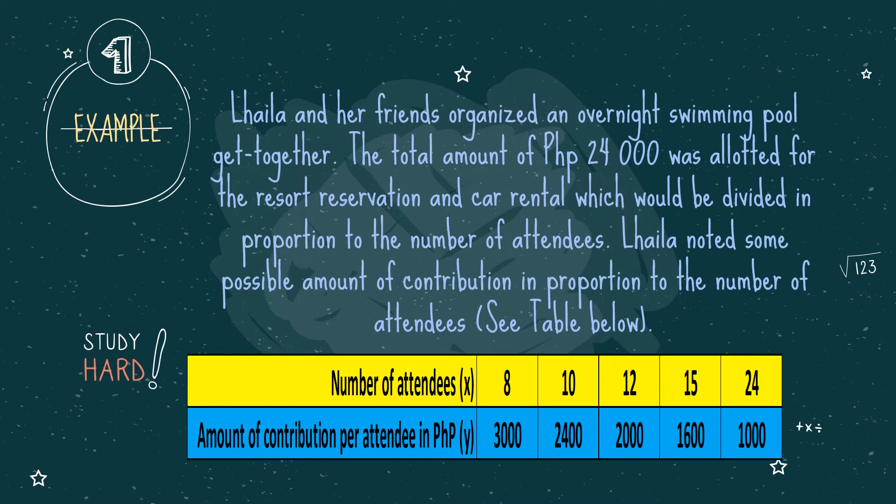For example, Laila and her friends organized an overnight swimming pool get-together. The total amount of P24,000 was allotted for the resort reservation and car rental, which would be divided in proportion to the number of attendees. Laila noted some possible amounts of contribution in proportion to the number of attendees — see table below.